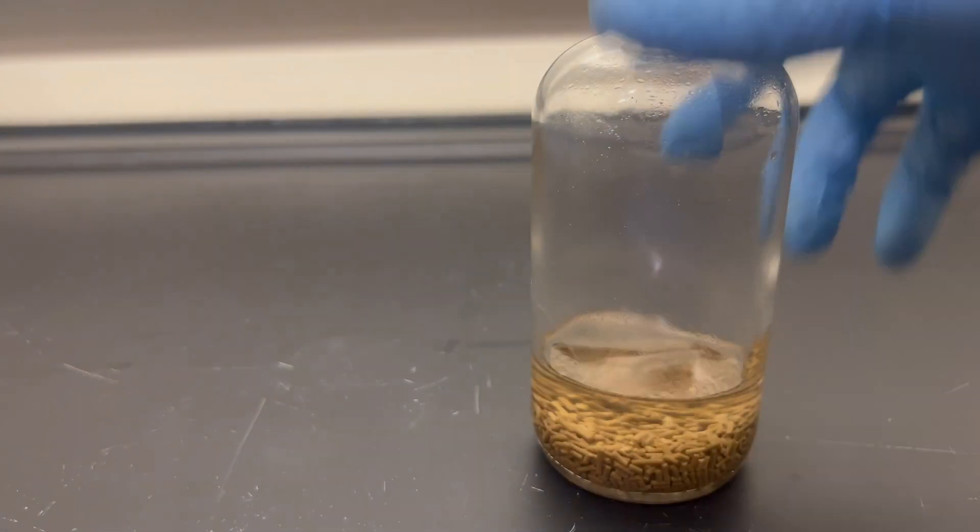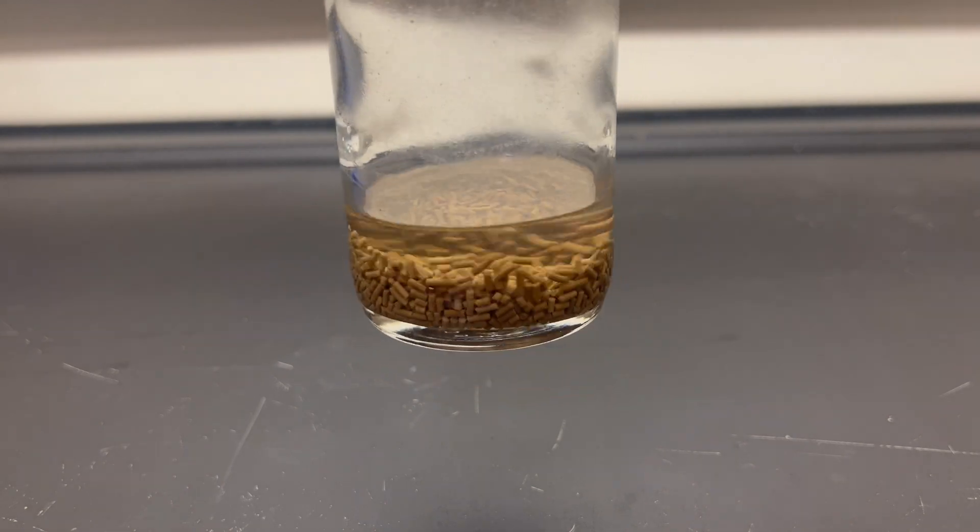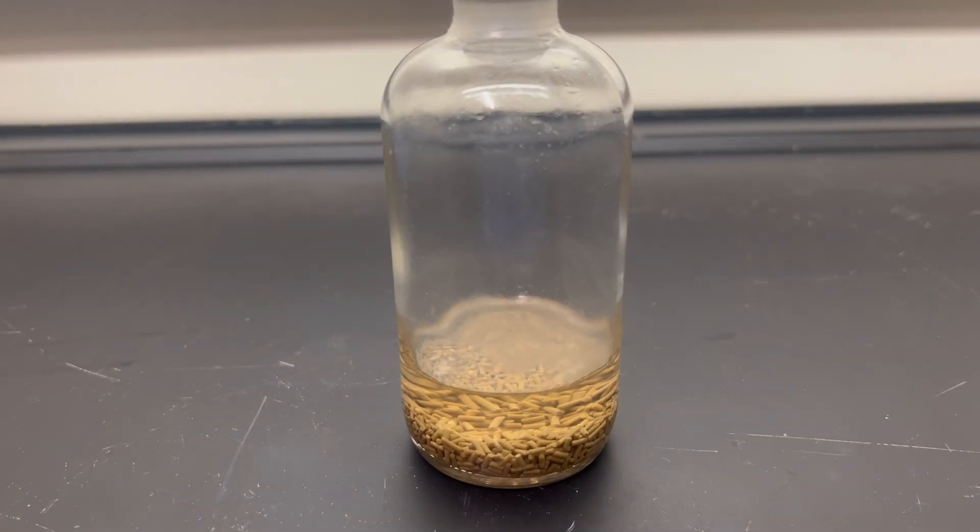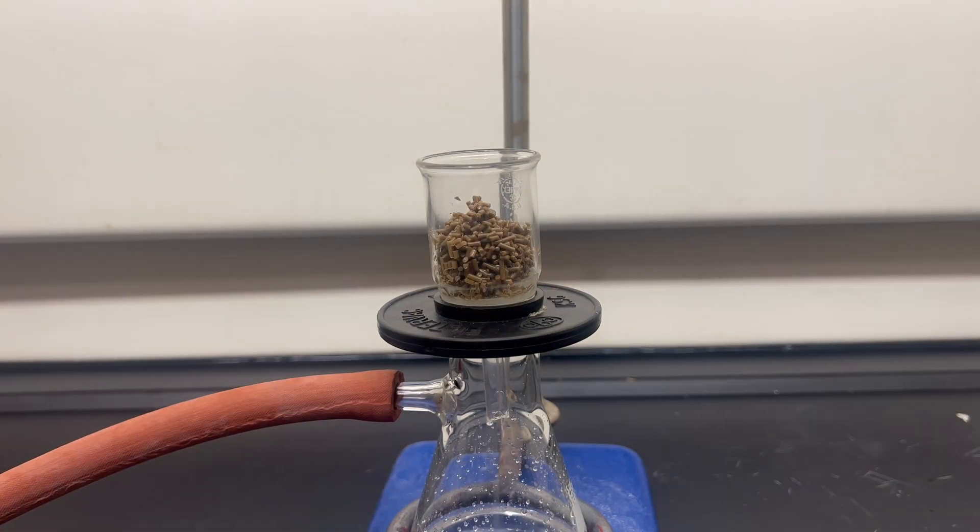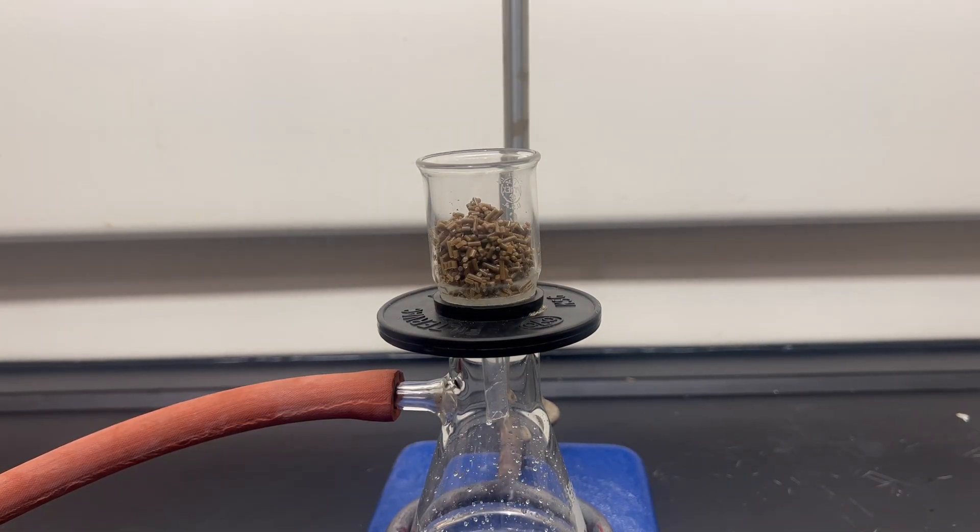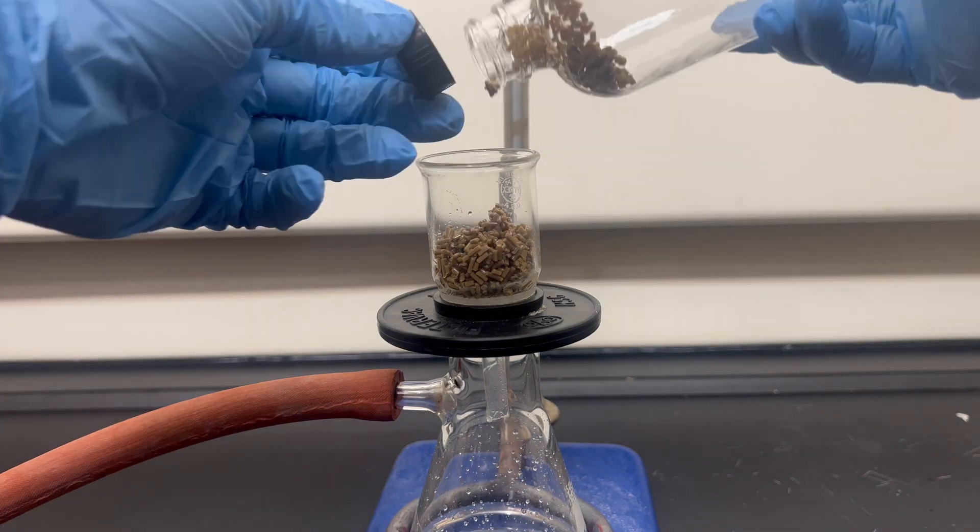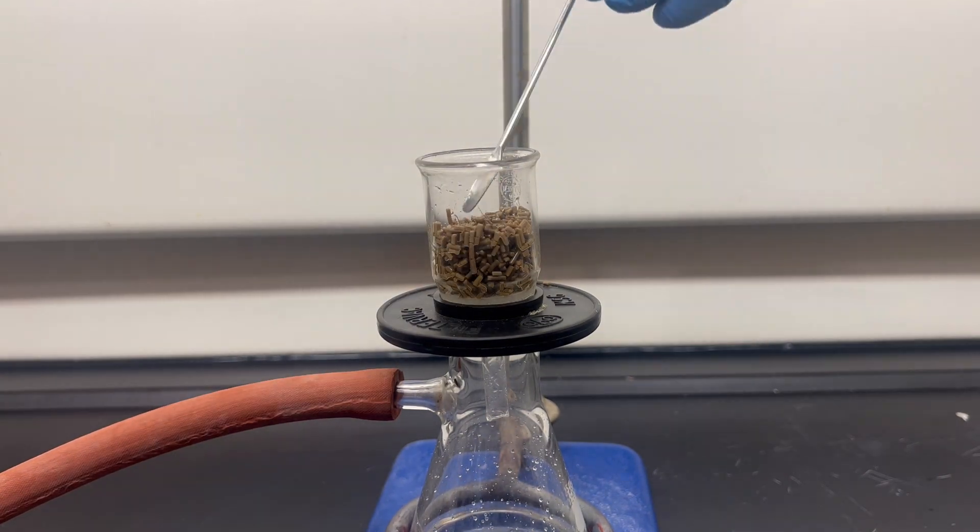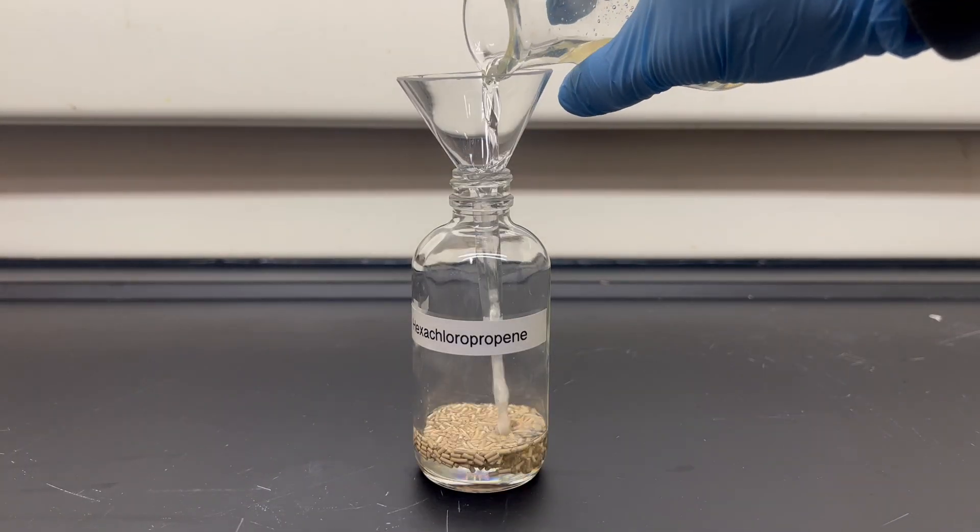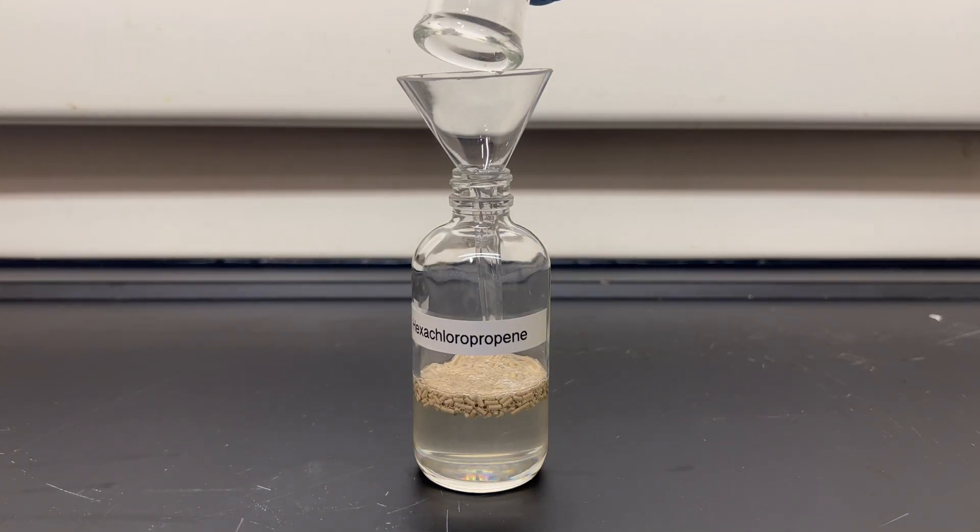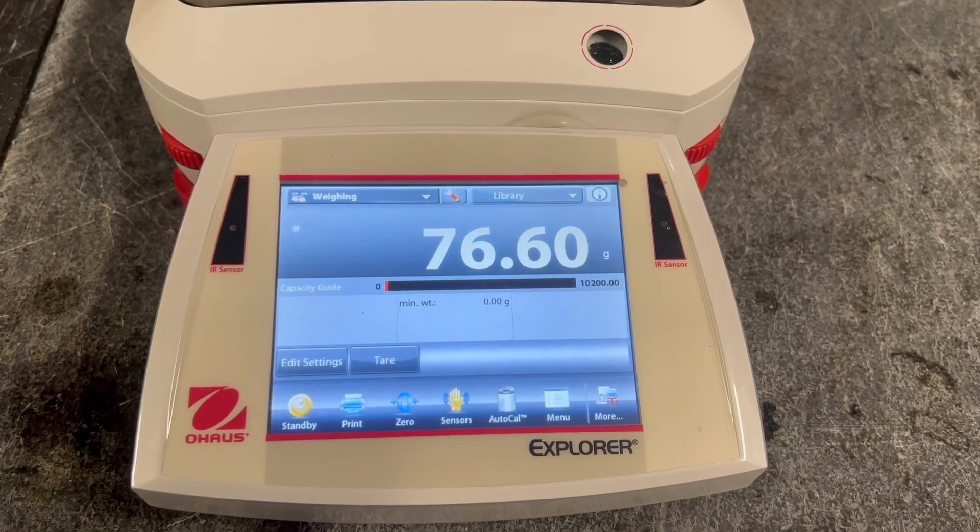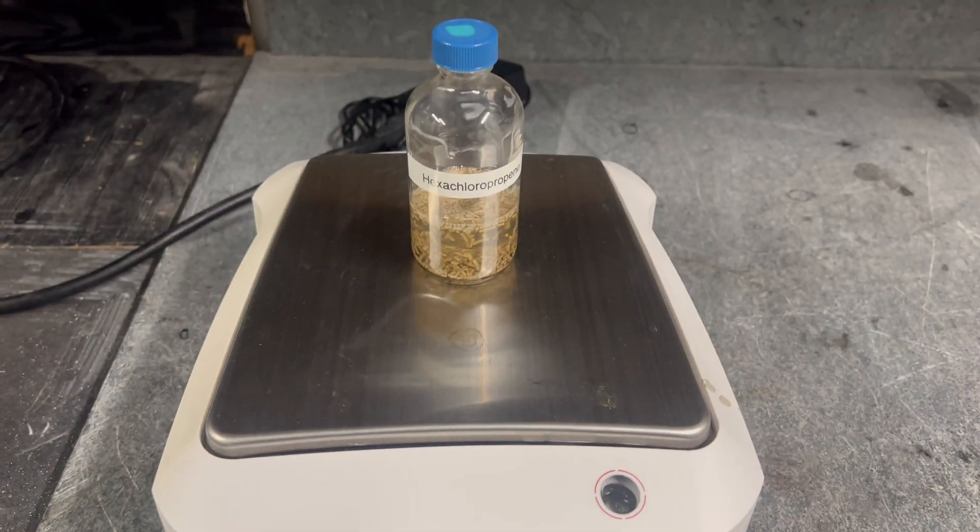The hexachloropropene is then transferred to a storage vessel with molecular sieves to keep it dry. The product is quite cloudy due to water being present, but after a few days while drying, it's nice and clear. I then filtered off the hexachloropropene and added new sieves to keep it dry. The yield was 76.60 grams.